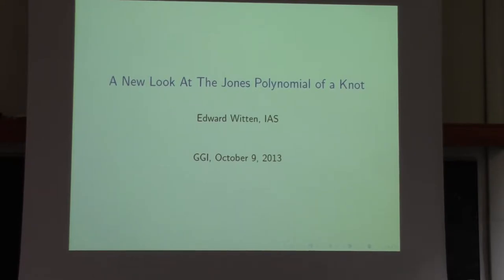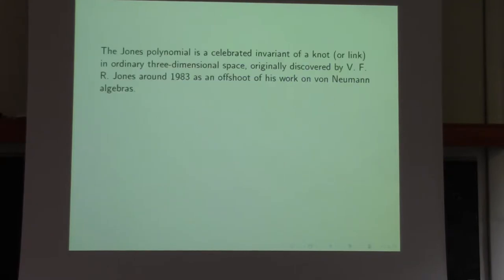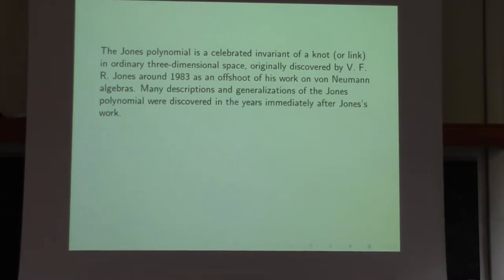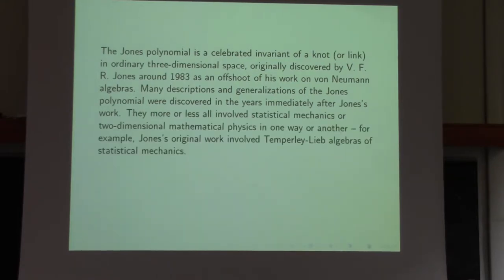Today we're going to go in a different direction. I'll be talking about something called the Jones polynomial of a knot. A knot is just a loop embedded in ordinary three-dimensional space. The Jones polynomial is a topological invariant of a knot that was originally discovered by Jones around 1983. Many descriptions of the Jones polynomial were discovered just in a few years after Jones' work, involving what are called the Temperley-Lieb algebras of statistical mechanics.